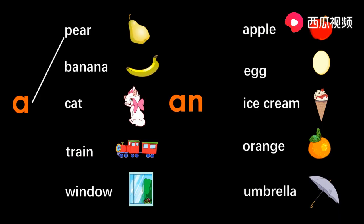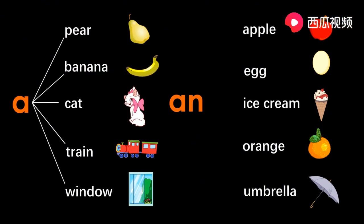A pear 一个梨. A banana 一个香蕉. A cat 一只猫. A train 一辆火车. A window 一个窗户. An apple 一个苹果. An egg 一个鸡蛋. An ice cream 一个冰淇淋.